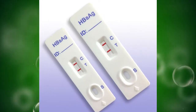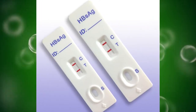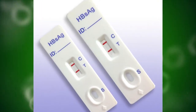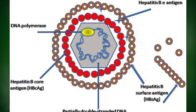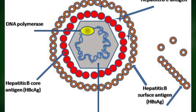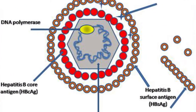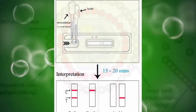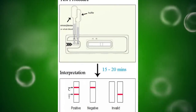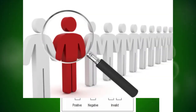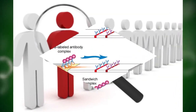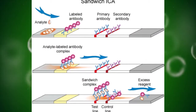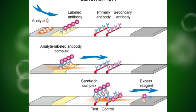The Hepatitis B Surface Antigen Rapid Test is important to check whether a patient presents Hepatitis B Surface Antigen or not. This test is considered a screening test, and uses the principle of immunochromatography.